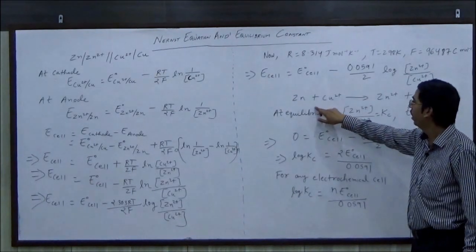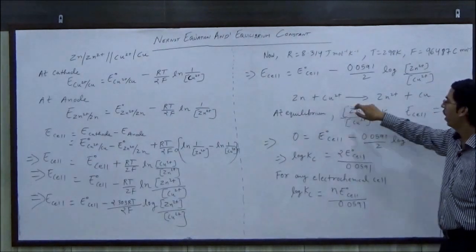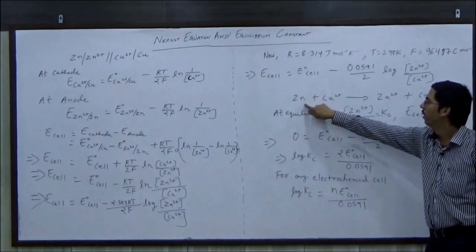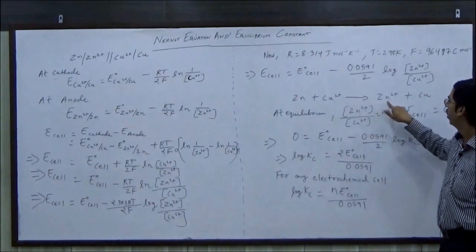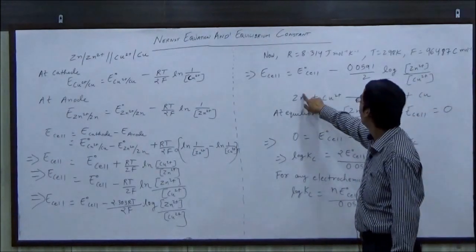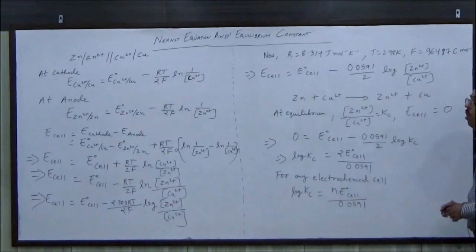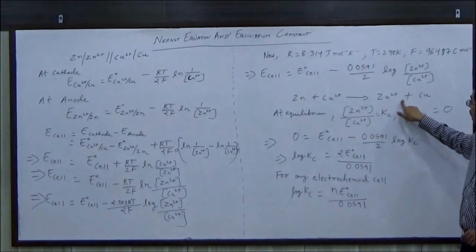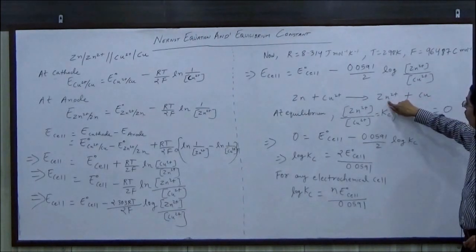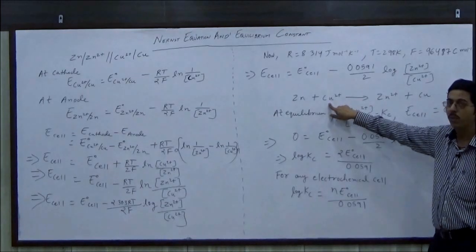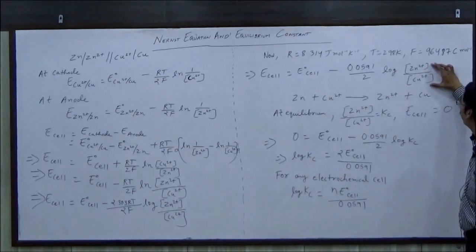Now, reaction written in Daniel's cell can be represented as Zn + Cu2+ → Zn2+ + Cu. Because at anode, oxidation takes place and at cathode, reduction takes place. Now we know that for this reaction, concentration of Zn2+ upon concentration of Cu2+ is the reaction quotient.